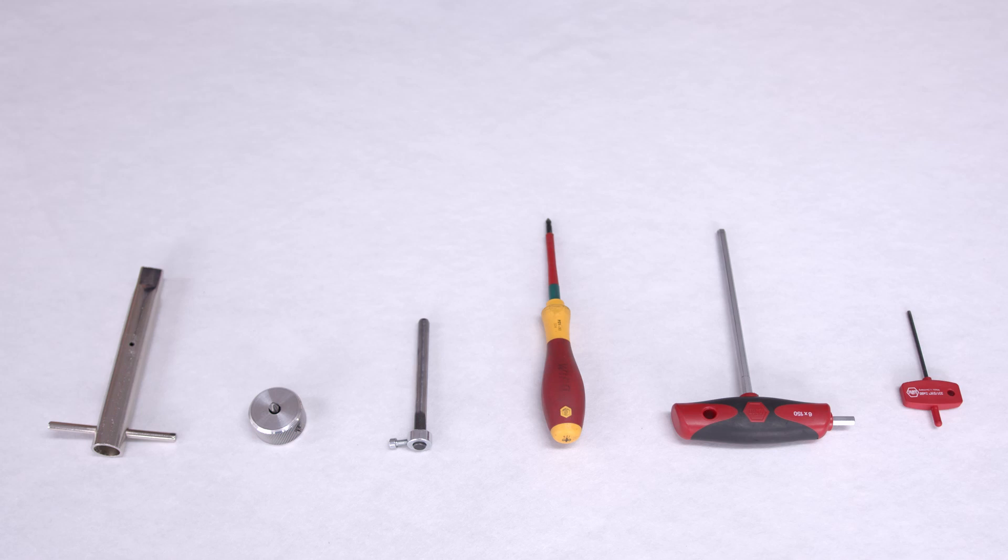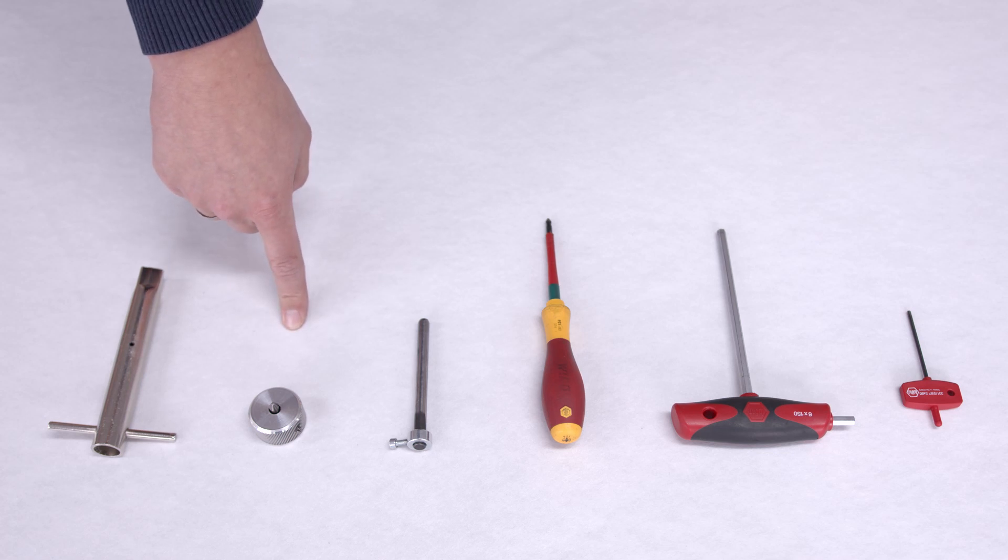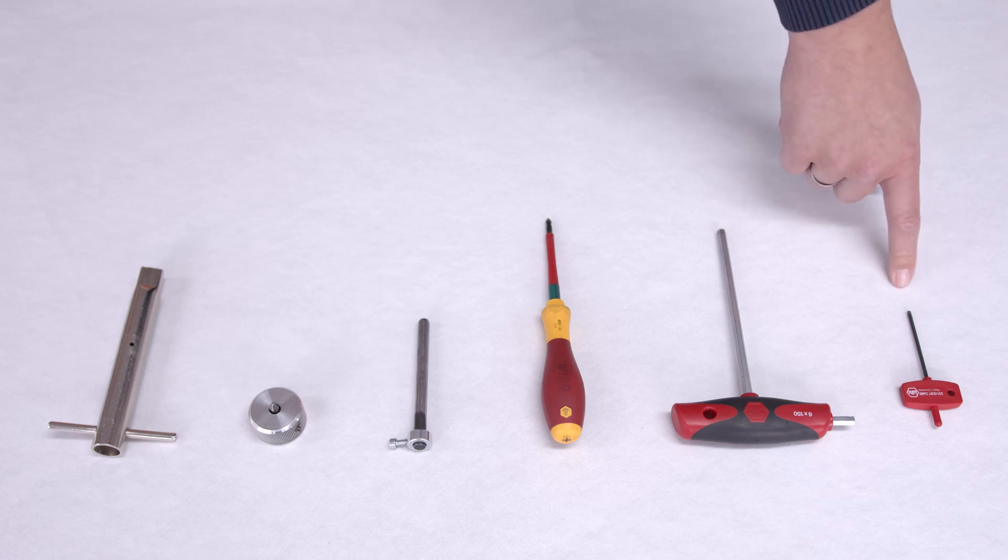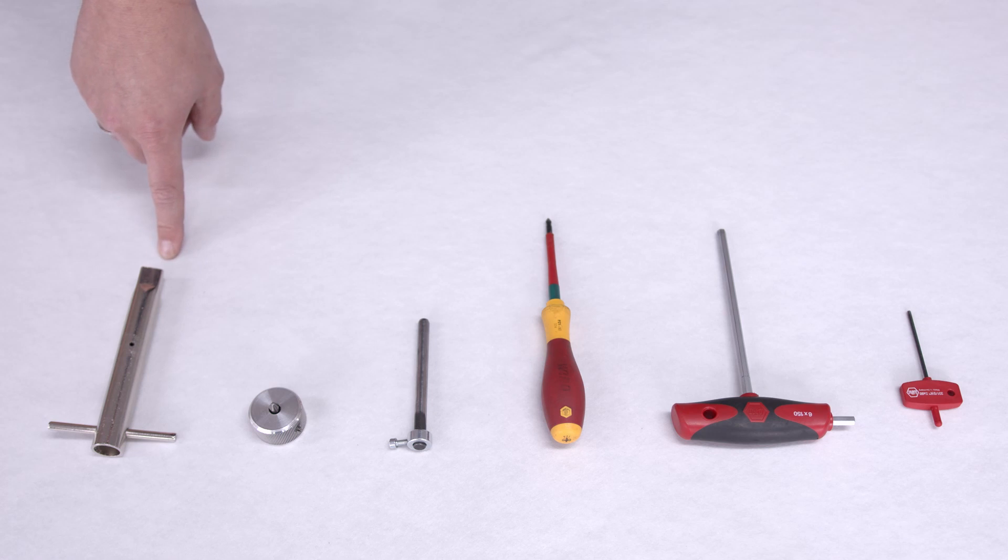For the next repair we need a square wrench, a stitch plate screwdriver, an 8 millimeter pin, a Phillips screwdriver, a 6 millimeter Allen key and a 2.5 millimeter Allen key. The first three tools are coming with the machine in the toolbox.